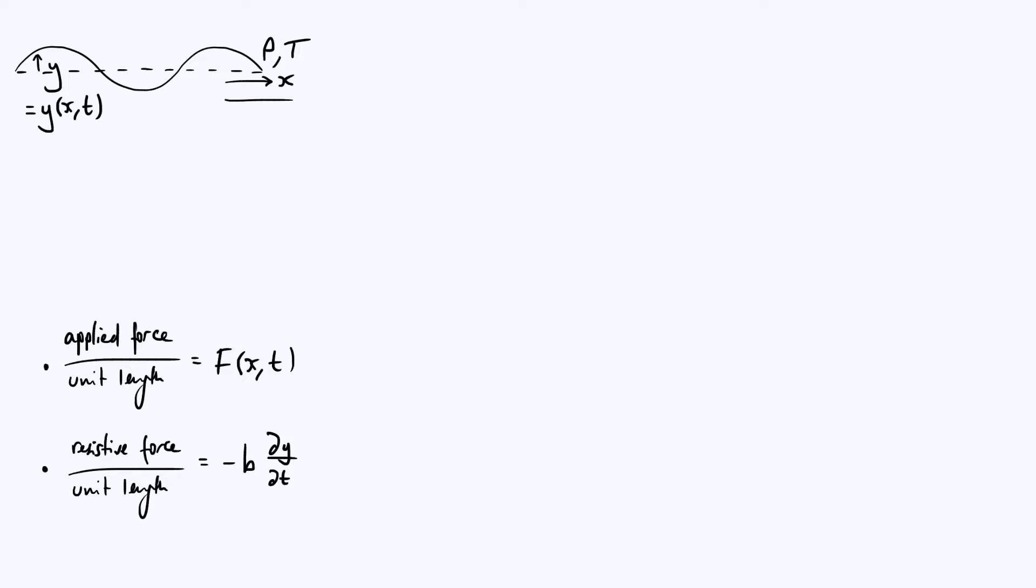We've now set up all the parameters we need in order to actually derive the wave equation, and the way to do that is to zoom in on one little element of the string and consider how it's moving. So I'll draw a box on the diagram at the top, so that we're focusing on that particular element of the string in there and draw a diagram of that string element, we're going to consider all the forces that are acting on it.